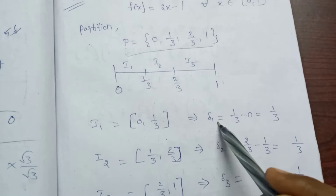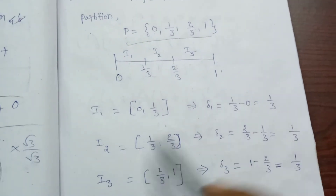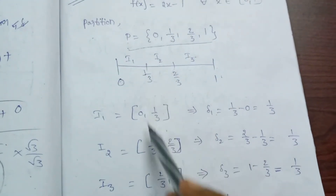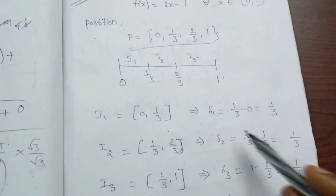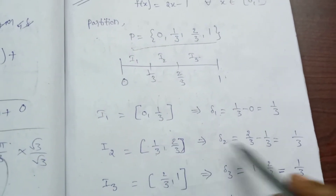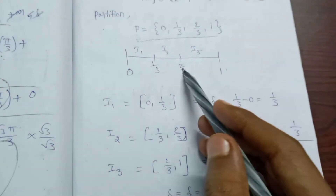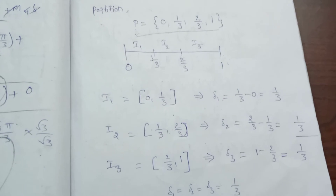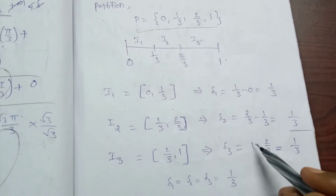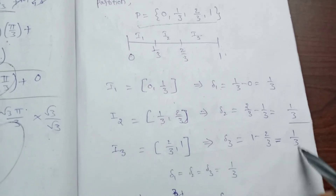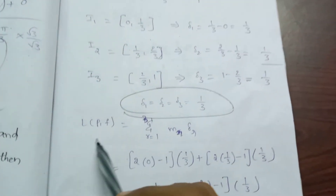I1 is equal to [0, 1/3], delta 1 is equal to 1/3 minus 0, which is 1/3. I2 is equal to [1/3, 2/3], delta 2 is equal to 2/3 minus 1/3, which is 1/3.